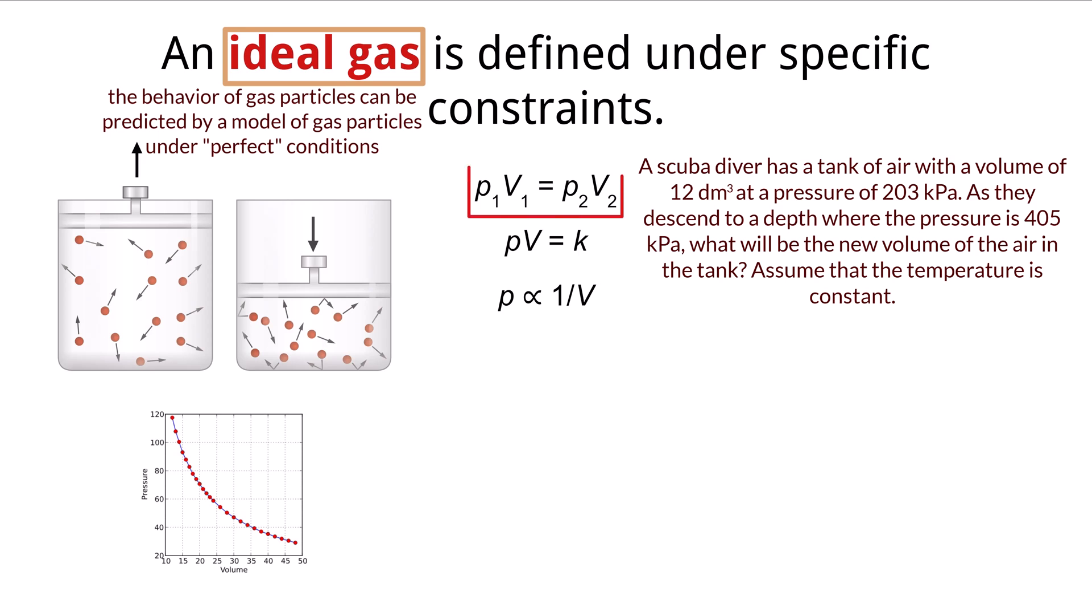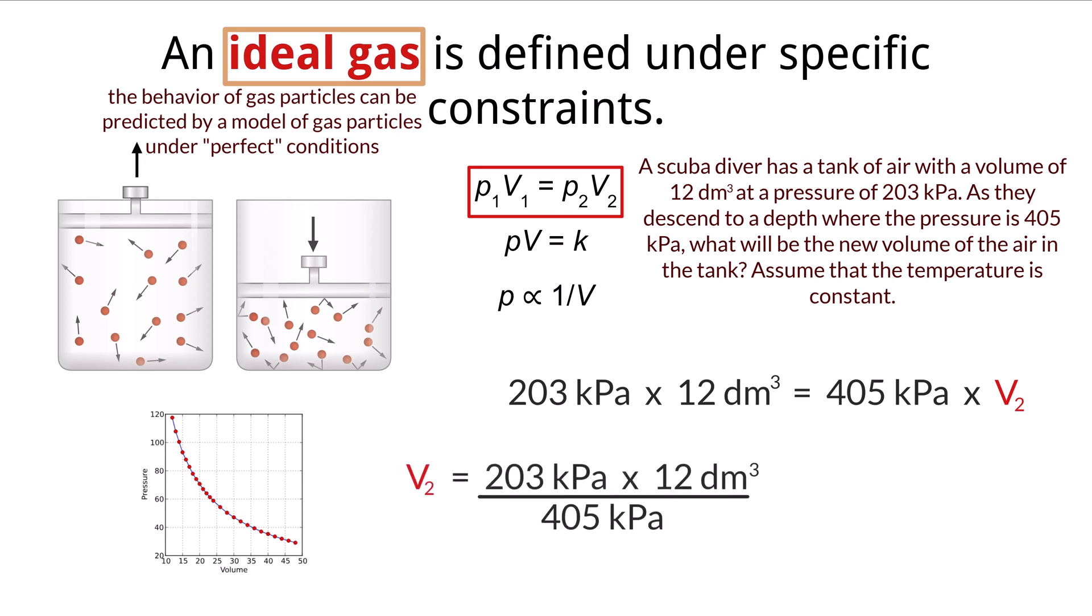We can use this specific Boyle's Law equation to answer the question. We plug in our known values for p1, v1, and p2. We then solve for v2 through a little algebra as seen here. We get a final volume of 6 cubic decimeters.